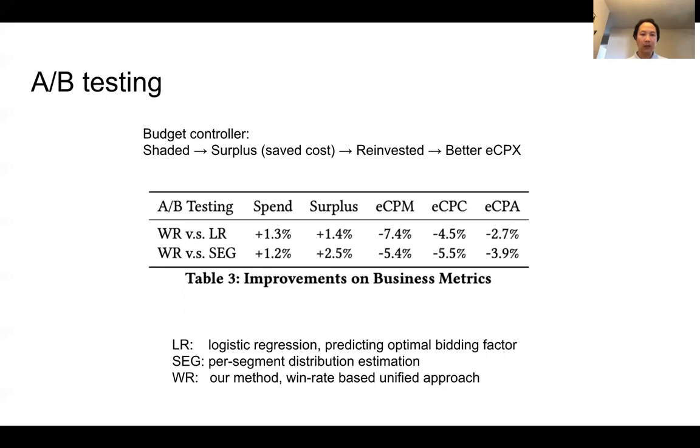And as you can see from this table, when we integrate our bid shading algorithm with our budget controllers, which controls how the saved money will be reinvested, our new model, win rate based model, can achieve much lower ECPM, ECPC, and ECPA, with very similar spend on top of having a higher surplus. So this shows that we formulated the problem in the right way.